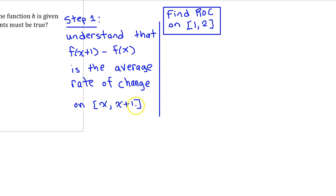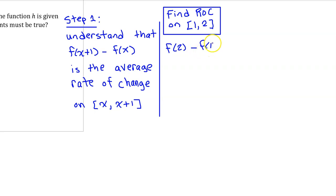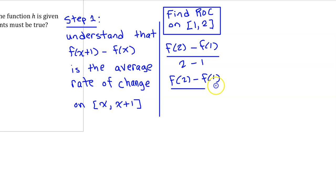x and x plus 1 are just consecutive numbers, so this interval is like from 1 to 2, or 3 to 4. The average rate of change on an interval of width 1 simplifies: f(2) minus f(1) divided by 2 minus 1 equals f(2) minus f(1), since we divide by 1. Similarly, on the interval from 2 to 3, f(3) minus f(2) over 1 equals f(3) minus f(2). So in general, the average rate of change from a to b simplifies to f(b) minus f(a) when b minus a equals 1.